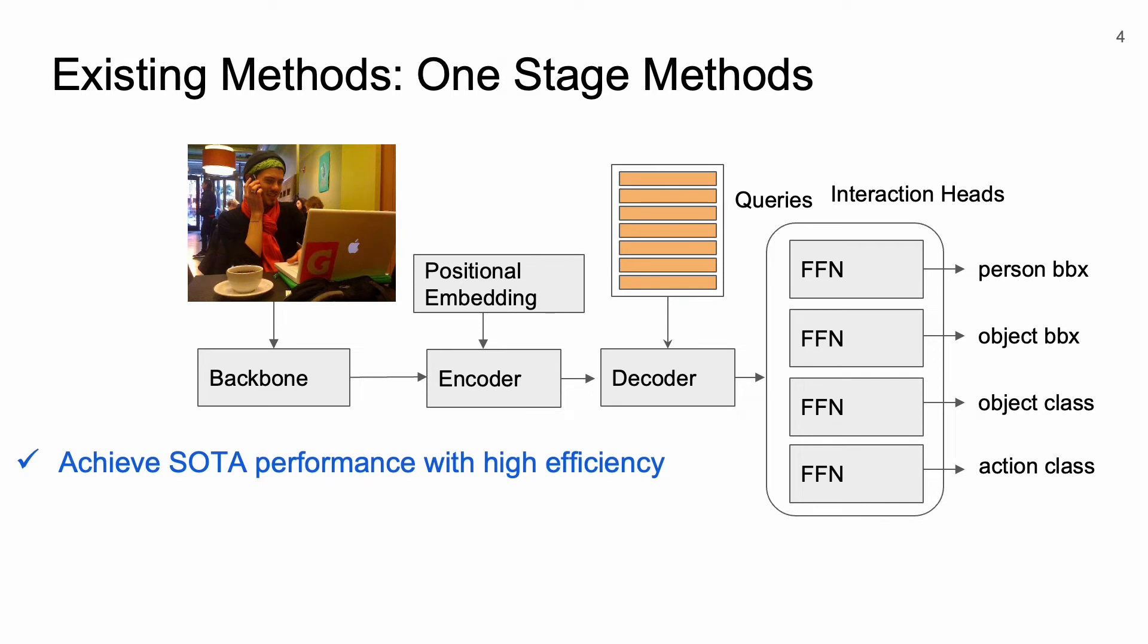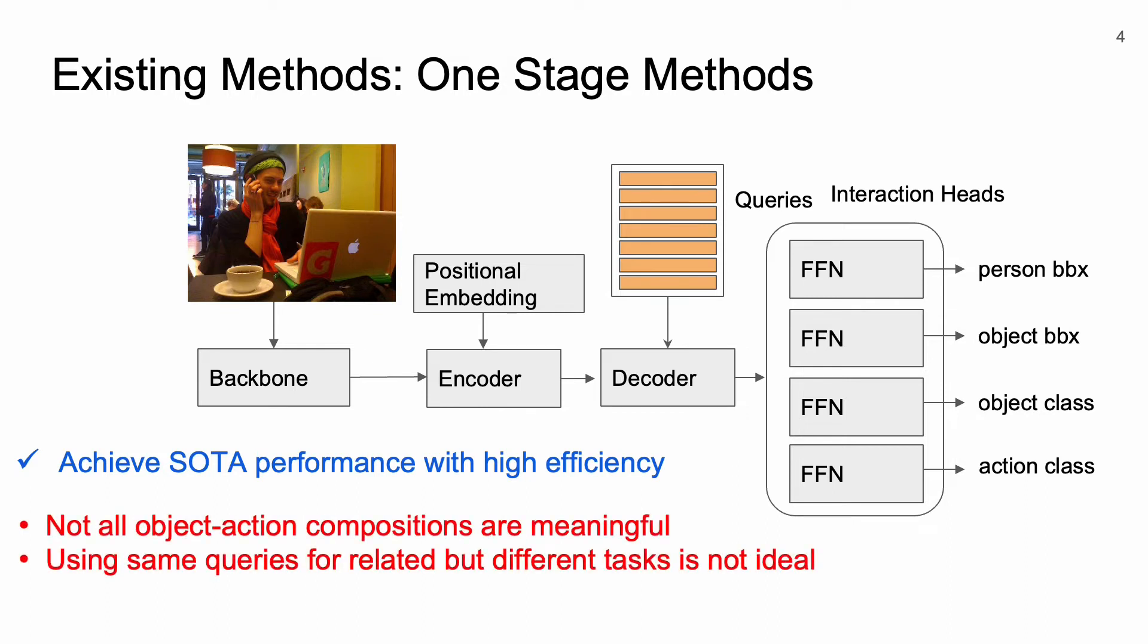However, they suffer from two major limitations. As not all object-action compositions are meaningful, relying on a one-shot network to classify them might not be effective. Also, every query is decoded for different tasks. Therefore, additional support features might be very useful.